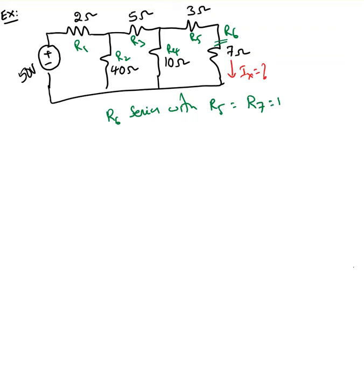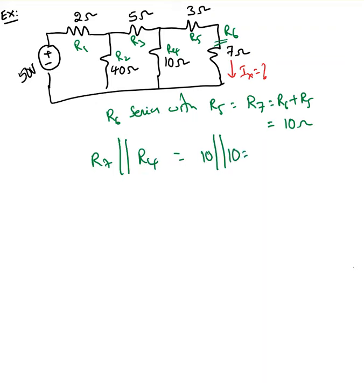Can I say R6 is in series with R5? I'll label that as R7, which is R6 plus R5 — that value is 10 ohms. Now can I say R7 is parallel with R4? That's 10 parallel with 10. When the same resistance values are in parallel, divide by the number of resistors. I'll call this R8 and redraw the circuit.